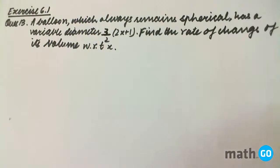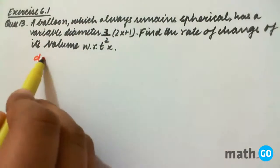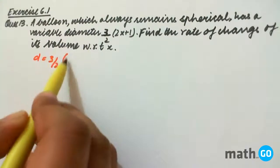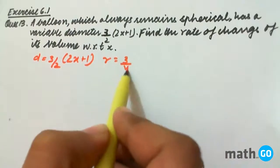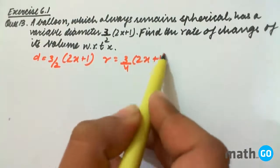Exercise 6.1, question number 13. A balloon which always remains spherical has a variable diameter. We have d equals 3/2 of (2x+1), or we have the radius equals to 3/4 of (2x+1).